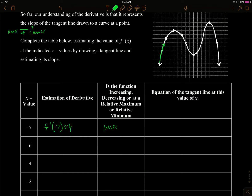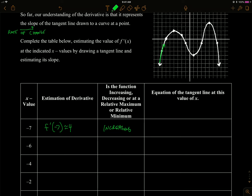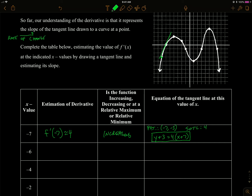They're asking if the function is increasing, decreasing, or has a relative max or minimum at this x value. As I go through that point from left to right, it's increasing. For the equation of the tangent line, the point of tangency looks like negative seven, negative three. The slope is estimated at four, so the equation is y plus three equals four times x plus seven.